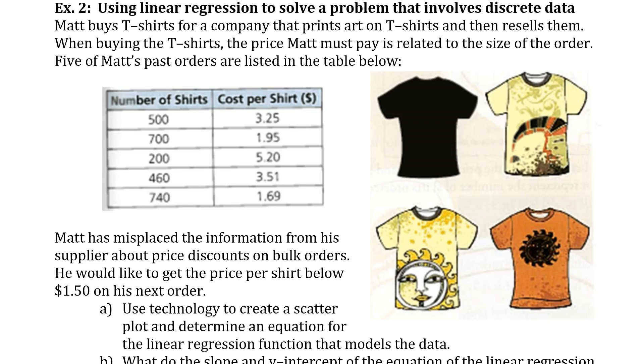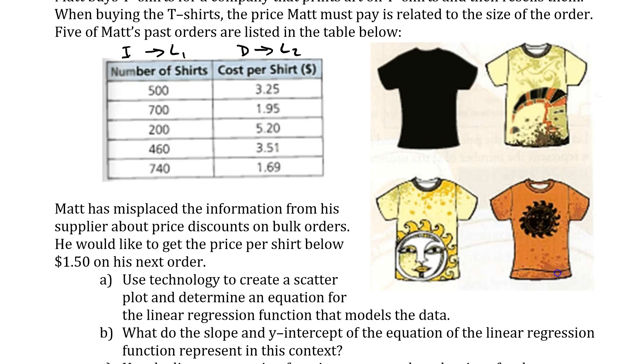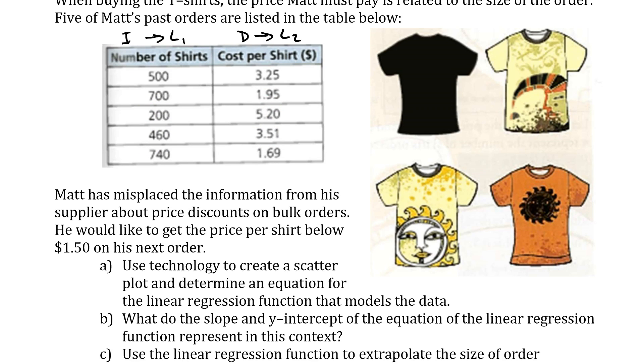Example two: using linear regression to solve a problem that involves discrete data. In the previous question, we talked about continuous data because you can have 0.5 of a kilometer, but you can't have 0.5 of something like a t-shirt. Matt buys t-shirts for a company and prints art on the t-shirts and then sells them. When buying t-shirts, the price Matt must pay is related to the size of order. Five of Matt's past orders are listed in the table below. This is our independent which goes in our L1, and this is our dependent which goes in our L2. Matt has misplaced the information from his supplier about the price discounts on bulk orders. He would like to get the price per shirt below $1.50.